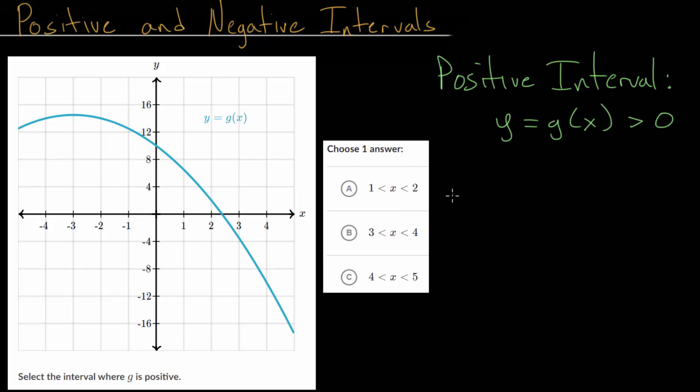Now, in contrast to this, you might be able to guess a negative interval is when our function is negative, when the y value for whatever our function is, is less than zero. Again, we're talking about which x values, which range or interval of x values, would have this y value less than zero. So with these definitions in mind, let's take a look at the example problems.